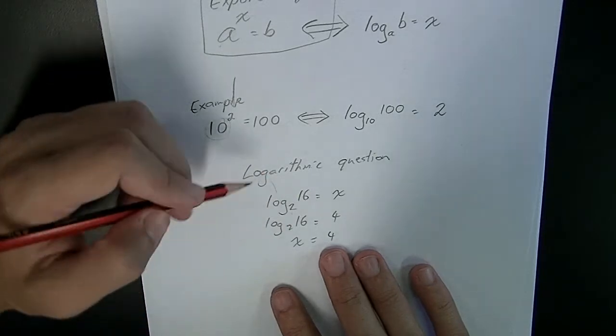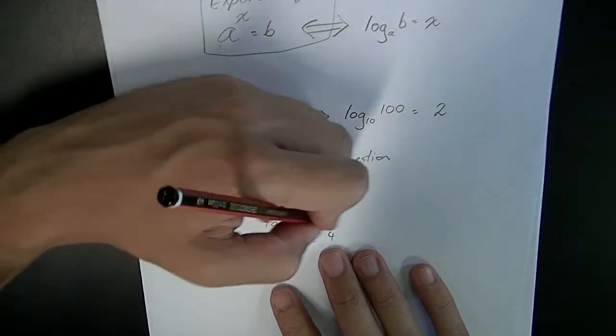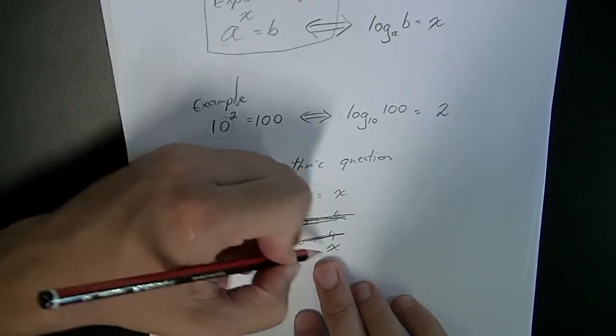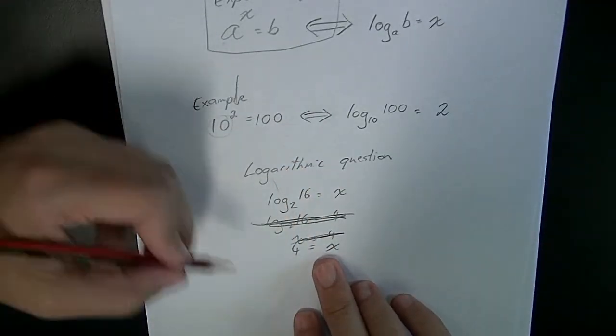That's a quick logarithmic question. You would probably just write that as log base 2 of 16 equals x, x equals 4, question done.